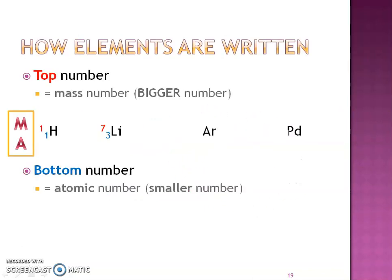A lot of professors and textbooks use a notation with the symbol, mass number on top, and atomic number on the bottom. So elements are written with the mass number as the bigger top number and the atomic number as the smaller bottom number. For example, hydrogen is one and one. Lithium has atomic number three — find it on the periodic table, round the atomic mass to get the mass number. Pause the video and find the two numbers for argon and palladium. Argon has atomic number 18 — round its atomic mass to get a mass number of 40. Palladium is number 46, and rounding its atomic mass gives a mass number of 106.